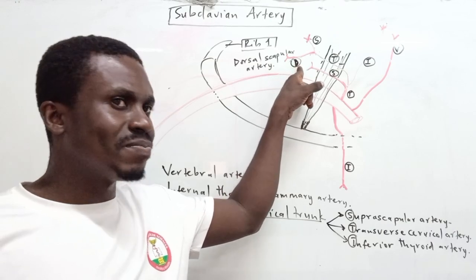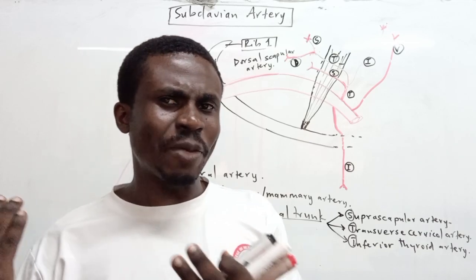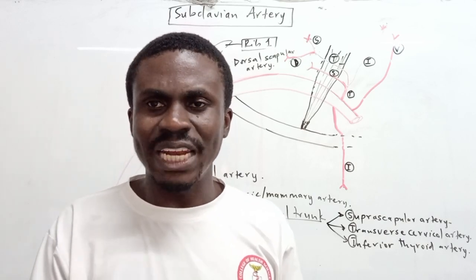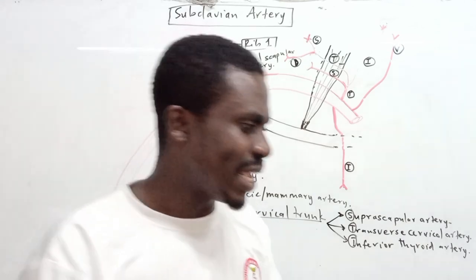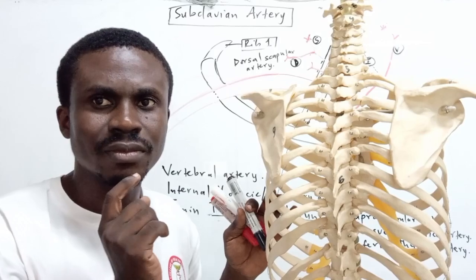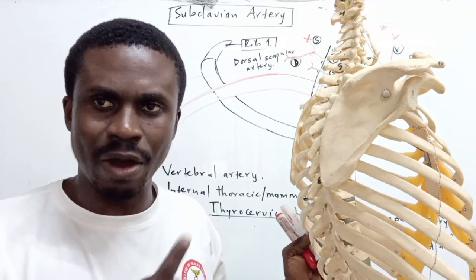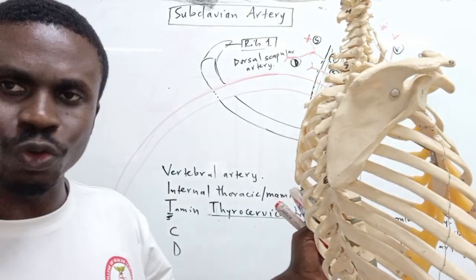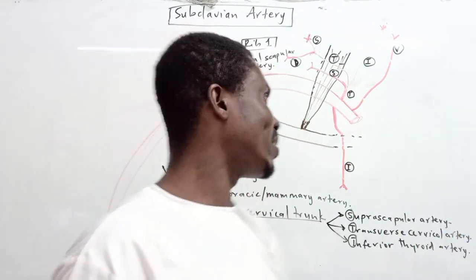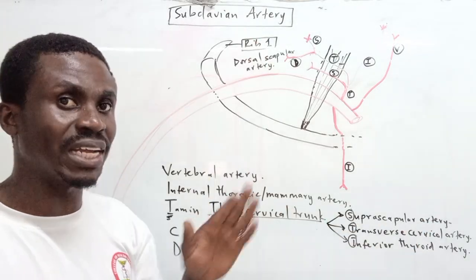The deep branch begins with D, and so does dorsal scapular artery. It is called the dorsal scapular artery because it runs dorsally along the medial border of the scapula, and it contributes to the rich arterial anastomosis of the scapula. Keep this in mind — I'll come back to an important point about it.